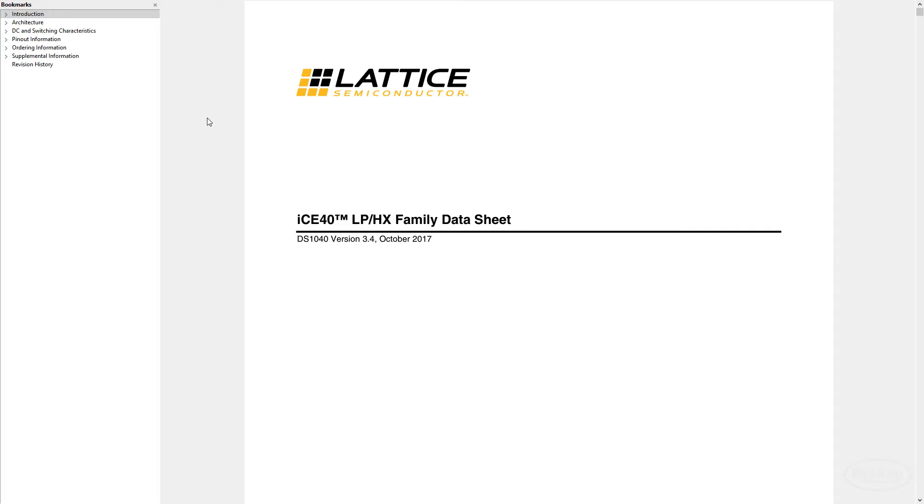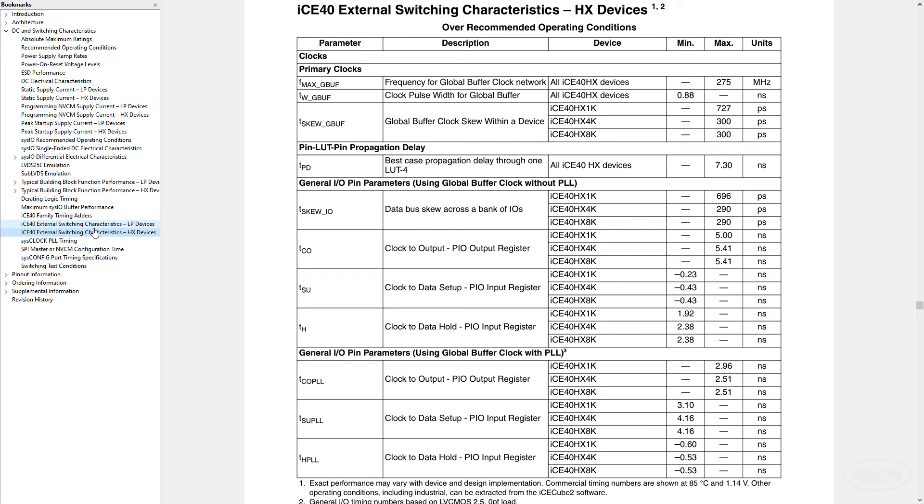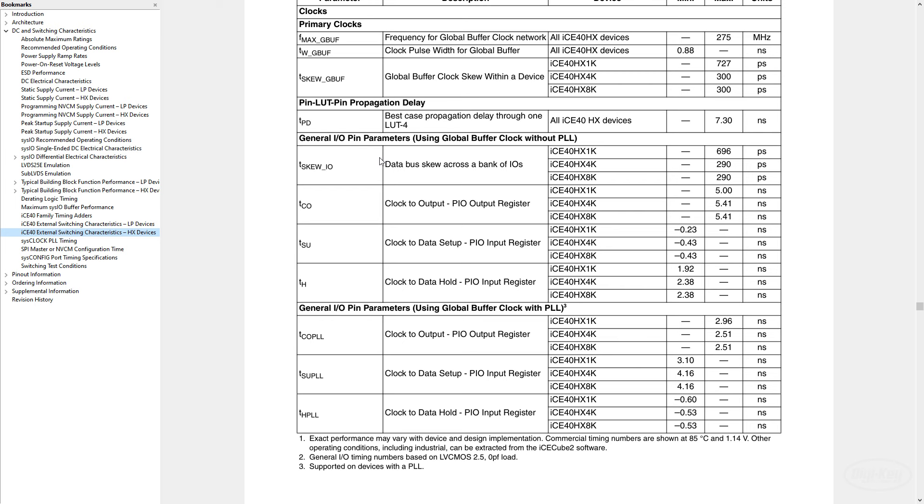If we look at the datasheet, we can see the listed setup and hold times for our HX1K device. However, note that like the propagation delays, these are only given for signals coming from a physical pin. Internal times aren't given, so we have to assume that the place and route tool will ensure everything meets timing. Interestingly enough, the setup time is negative. This means that your signal change can actually arrive slightly after the clock edge and still be okay.